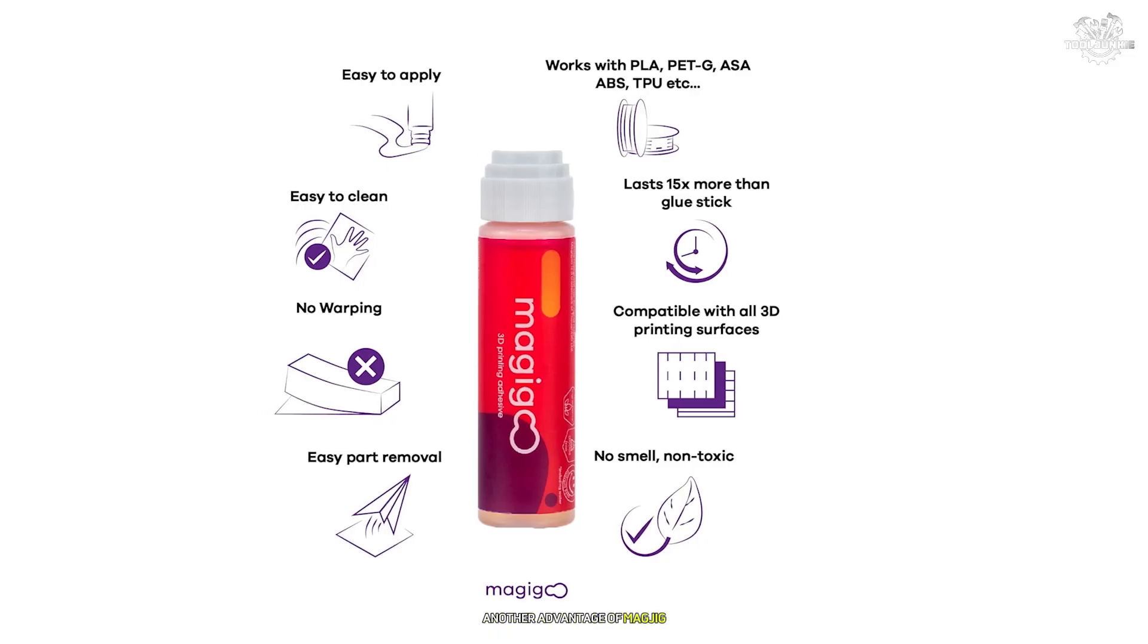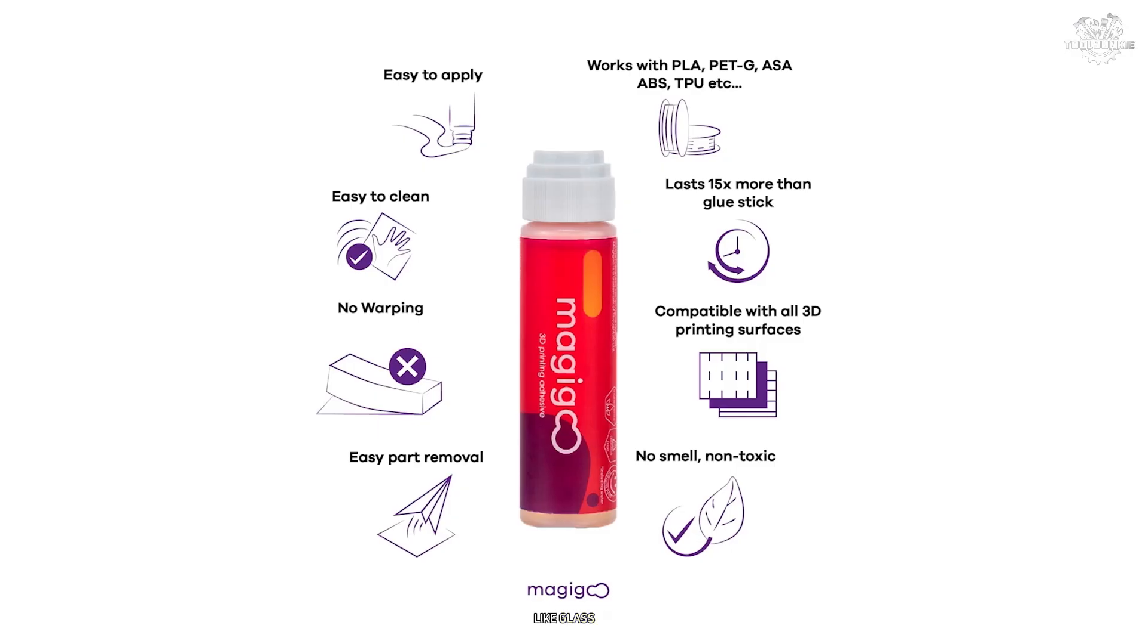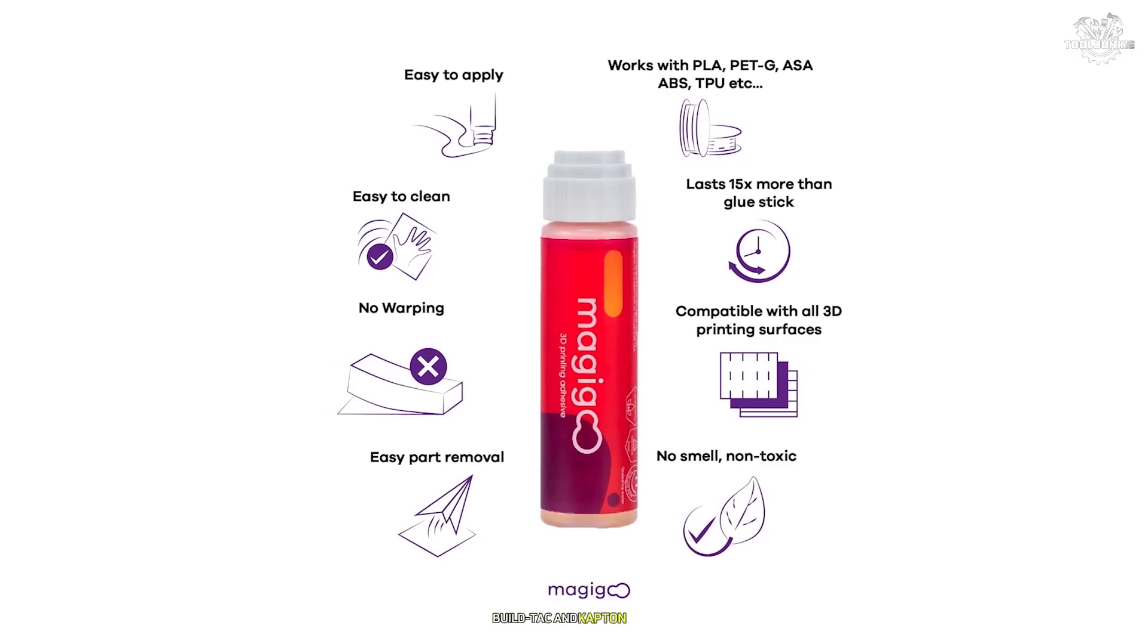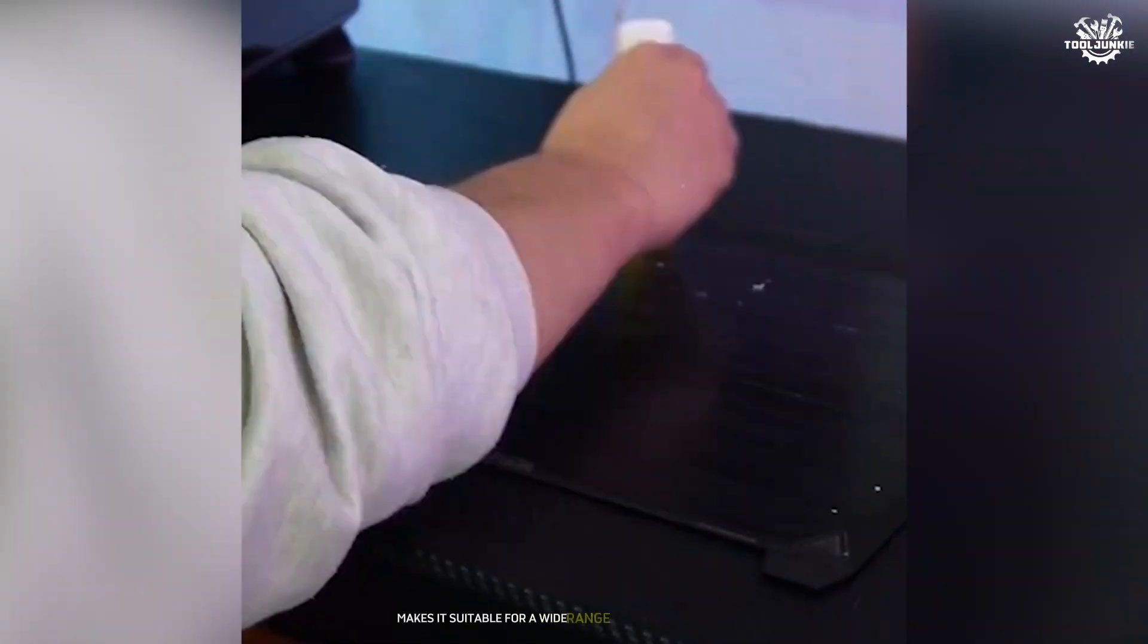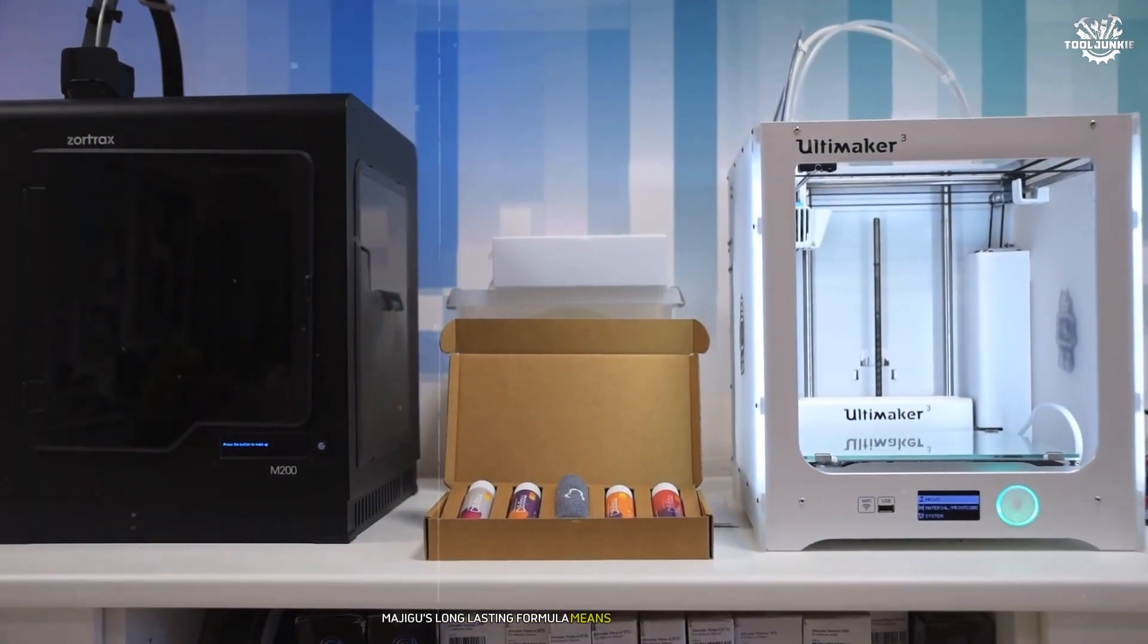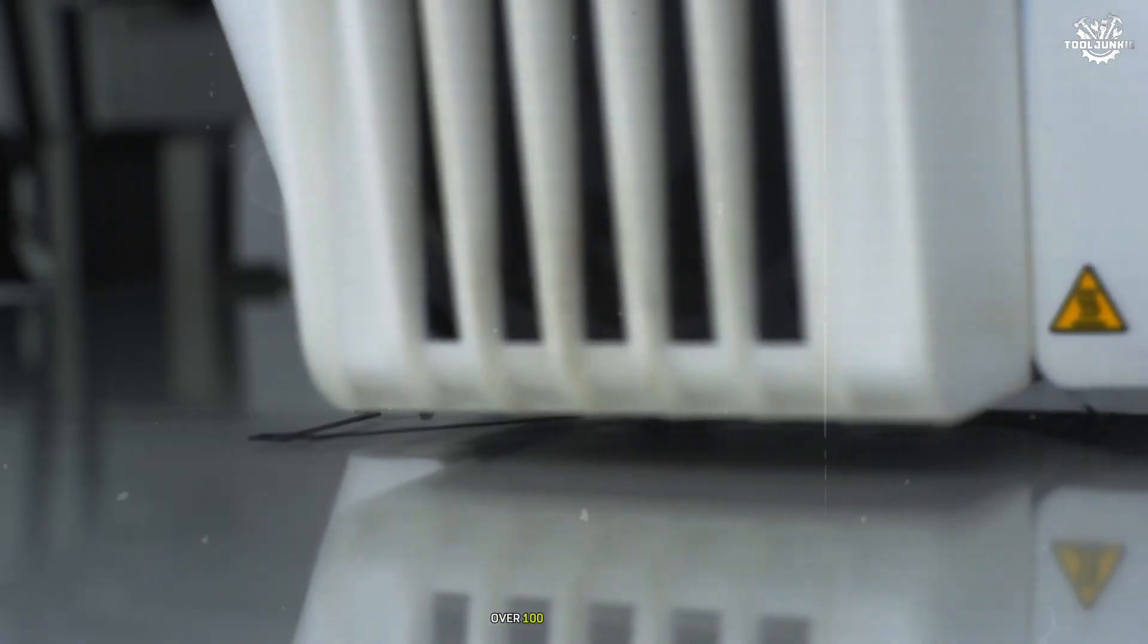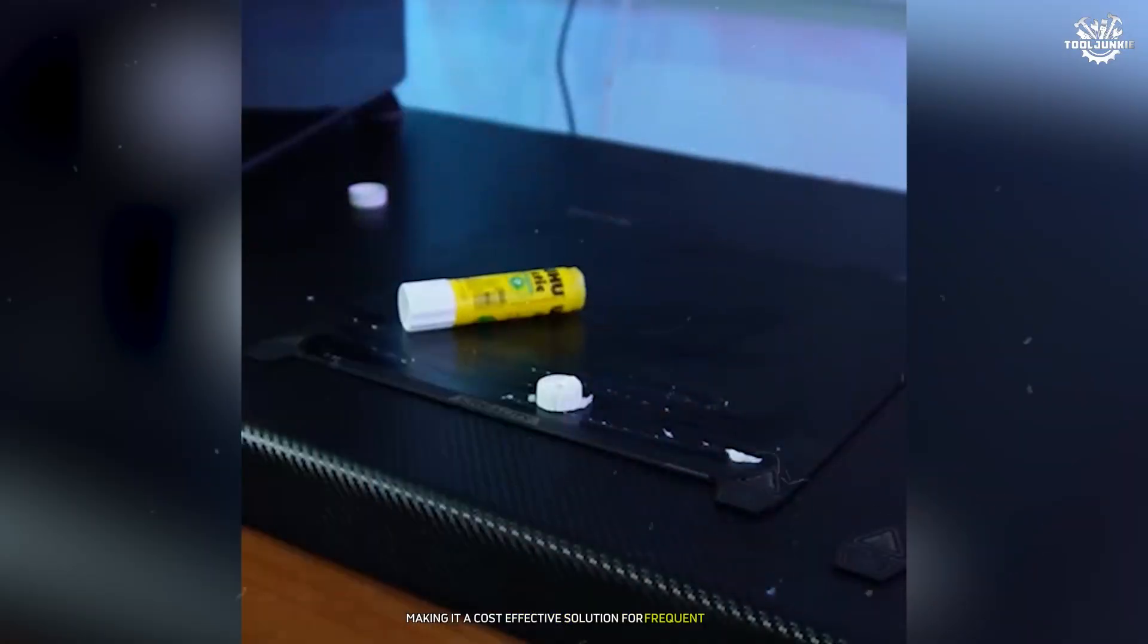Another advantage of MAJIGOO is its compatibility with various build plate materials like glass, PEI, BuildTac, and Kapton tape. This versatility makes it suitable for a wide range of printers and setups. Additionally, MAJIGOO's long-lasting formula means that one bottle can last over 100 prints on average, making it a cost-effective solution for frequent users.